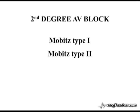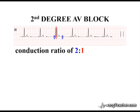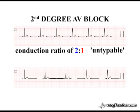In addition to the major subdivisions of second degree AV block, two further variants are also recognised. Second degree AV block with a conduction ratio of 2 to 1 is termed untypable; with only one PR interval before each non-conducted P-wave, there is no way of knowing if this is Mobitz type 1 or type 2. High grade second degree AV block exists when at least two consecutive P-waves fail to conduct to the ventricular myocardium.